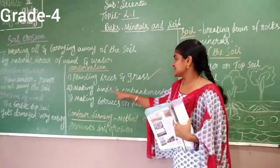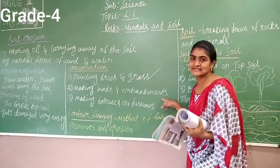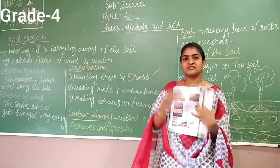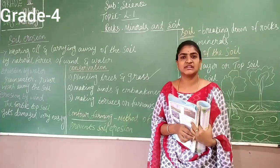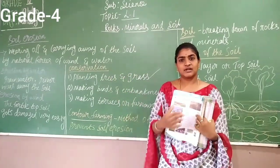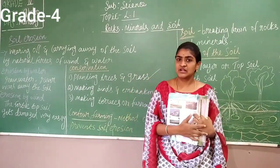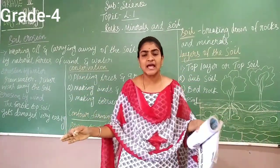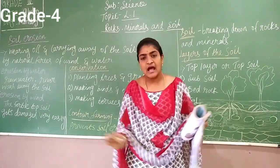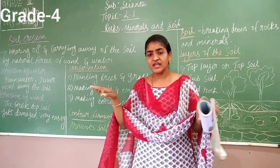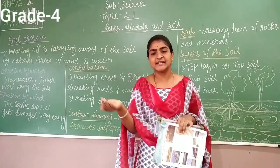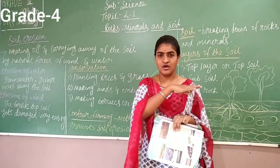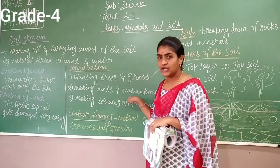Next is making bunds and embankments. In rivers, they construct dams in between. Whenever there is heavy rainfall, water in the river increases. More soil also comes along with the water. When a dam is constructed in between the river, the soil also stops there. Whatever water fills up, the soil particles slowly settle down at the bottom. Then the water moves off. Like that way, we can stop soil erosion.